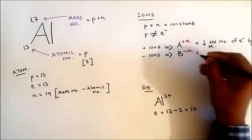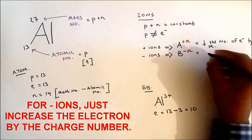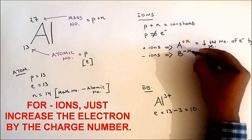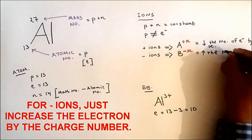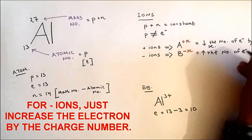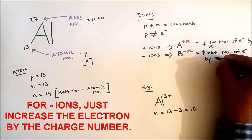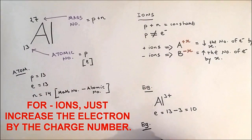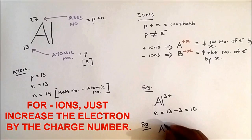For a negative ion, if you have a minus x, then increase the number of electrons by such x number. Okay, an example: I'm going to take the same aluminum and I'm going to write minus 2.